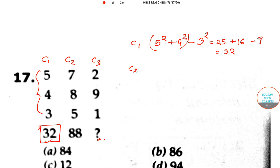So 7² + 8² - 5². What is the answer? 7² means 49 plus 64 minus 25, so the answer is 88.